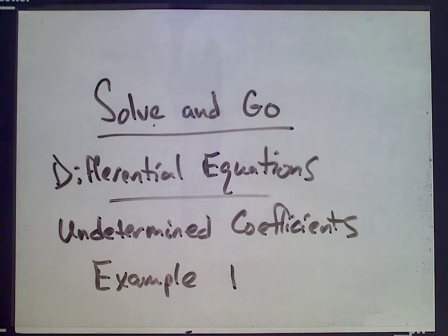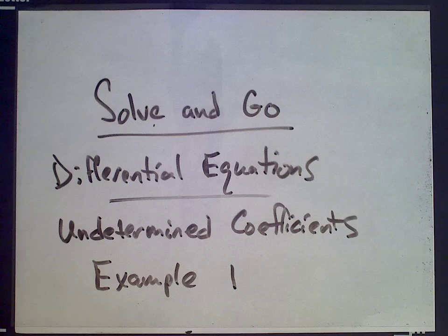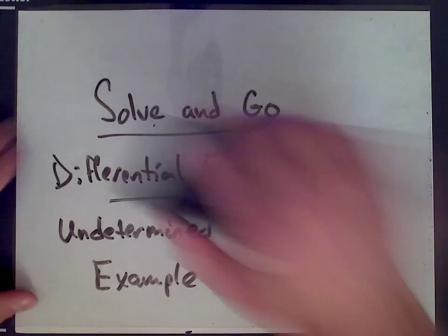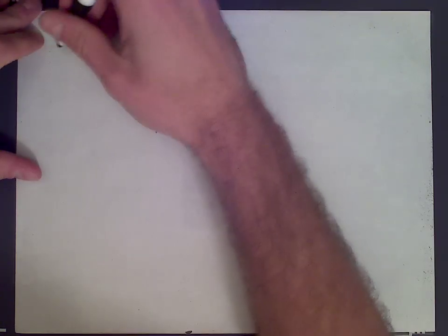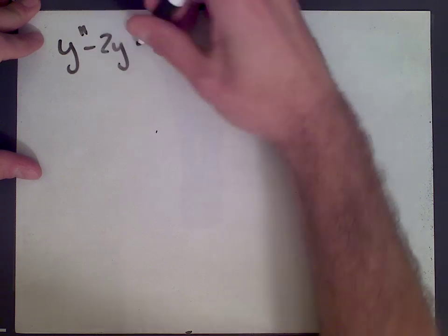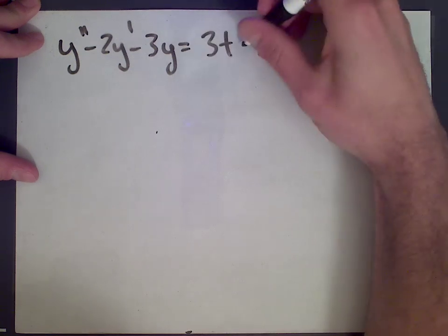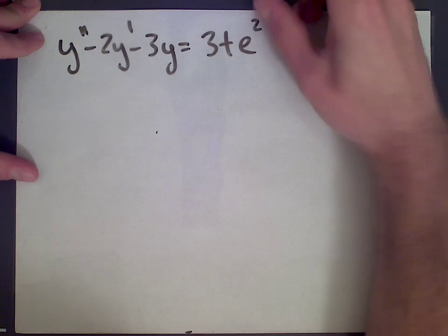Hi, welcome to SolveAndGo.com. This is the first example of solving a differential equation using the method of undetermined coefficients. This can be used to solve differential equations of the following form. So we have y double prime minus 2y prime minus 3y equals 3t times e to the power of 2t.